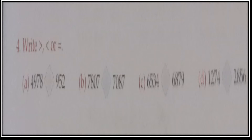Now children, you have to do comparison here — how to write the greater, less, or equal sign. First you will compare starting from the thousands place. You can also count the number of digits: whichever number has more digits is the greater one. See the first question: 4978 is a 4-digit number whereas 952 is a 3-digit number, so 4978 is greater than 952.